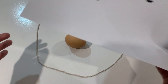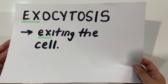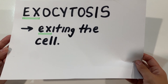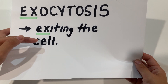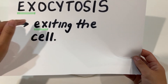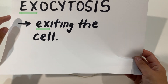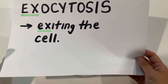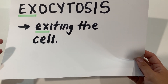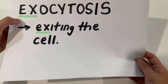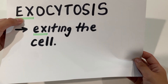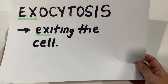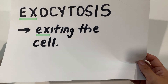Now, exocytosis is the opposite of endocytosis. This involves the exiting out of a cell — so removing something out, or something moving out. It's easy to remember because of the letters X: exocytosis meaning exit or leaving.